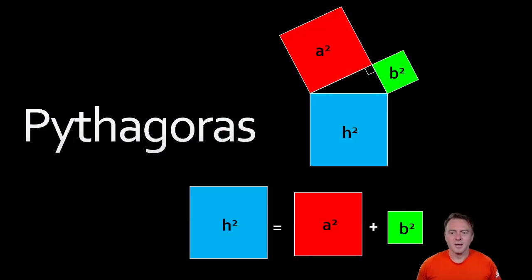So let's jump on in. So Pythagoras's theorem is pretty simple. It's basically the hypotenuse or the bigger side squared is equal to the other two sides squared added together.